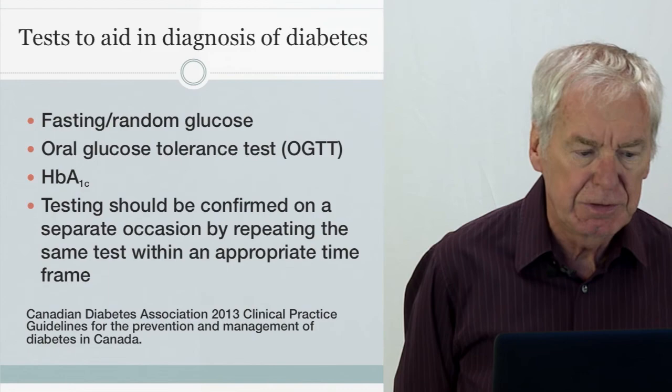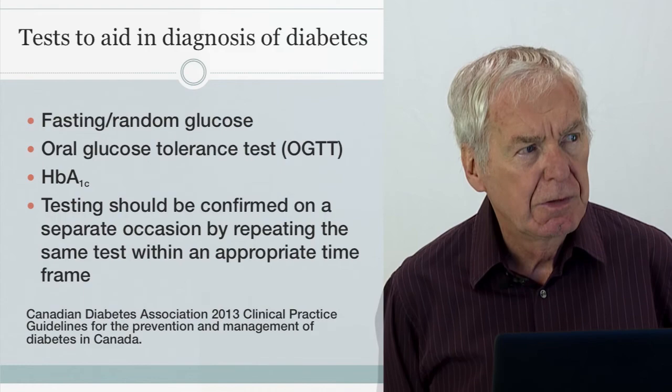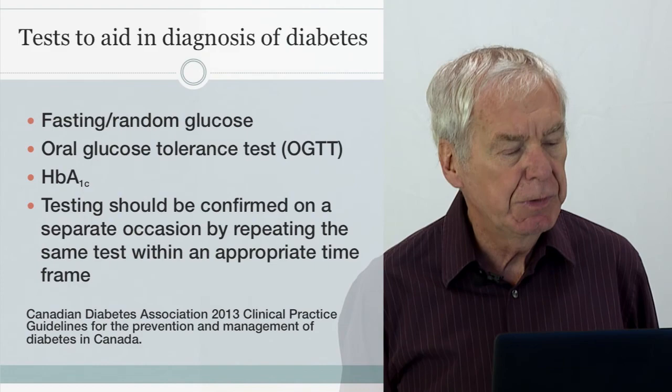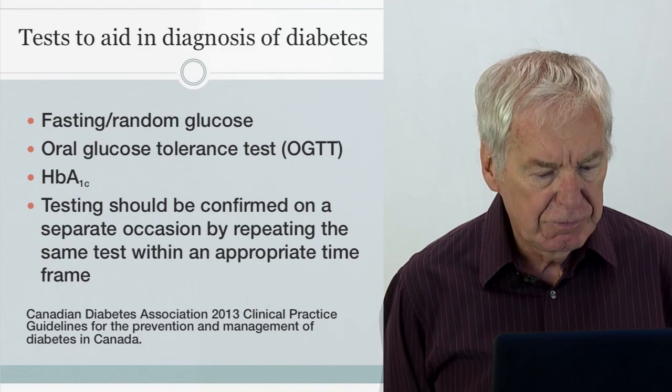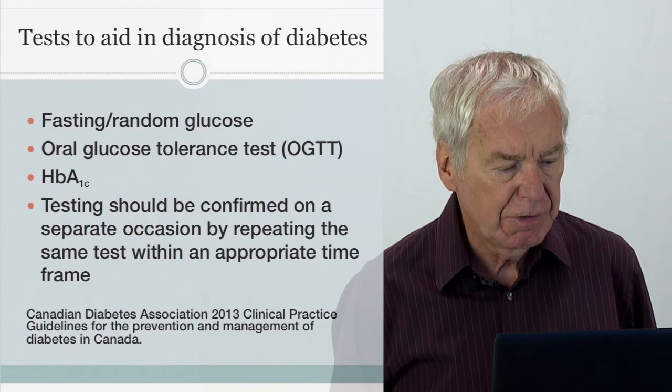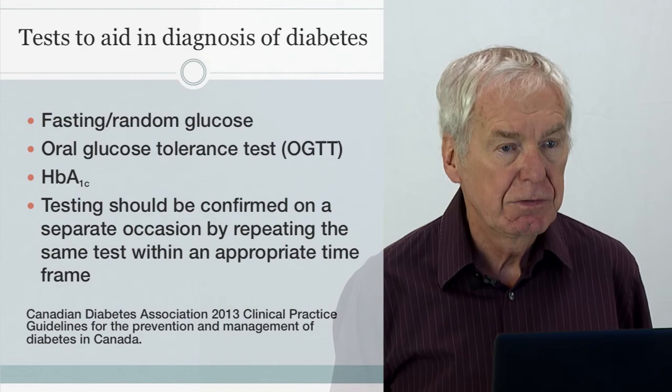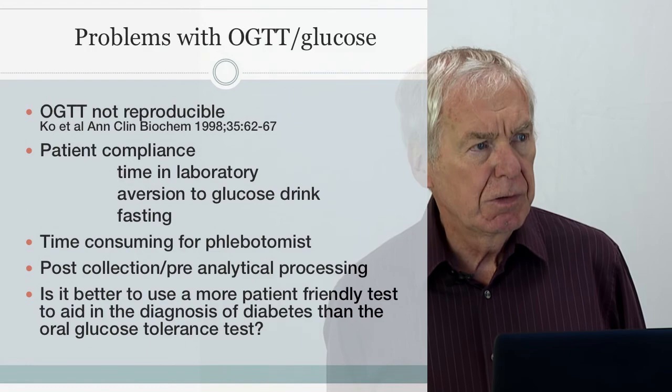What tests do we have to aid in the diagnosis of diabetes? First, a fasting or random glucose. Second, an oral glucose tolerance test. Third, hemoglobin A1c. There is a caveat: testing should be confirmed on a separate occasion by repeating the same test within an appropriate time frame.